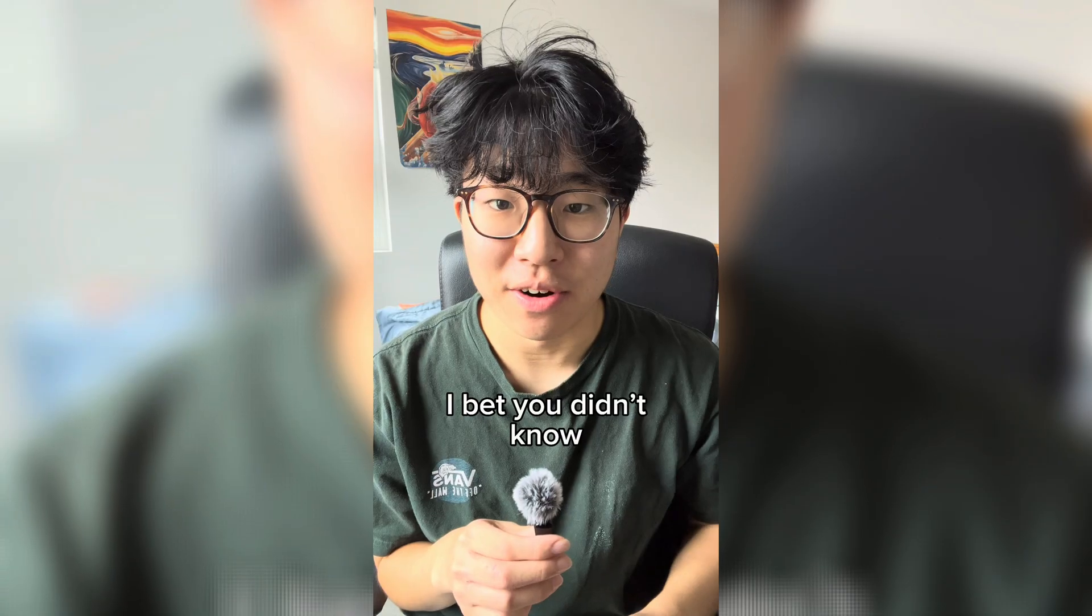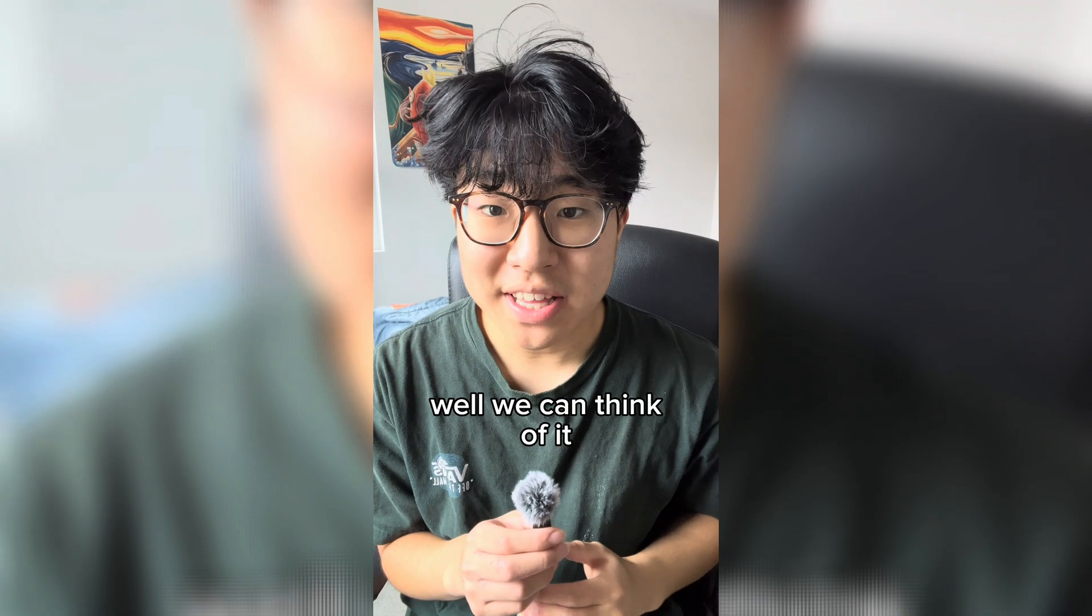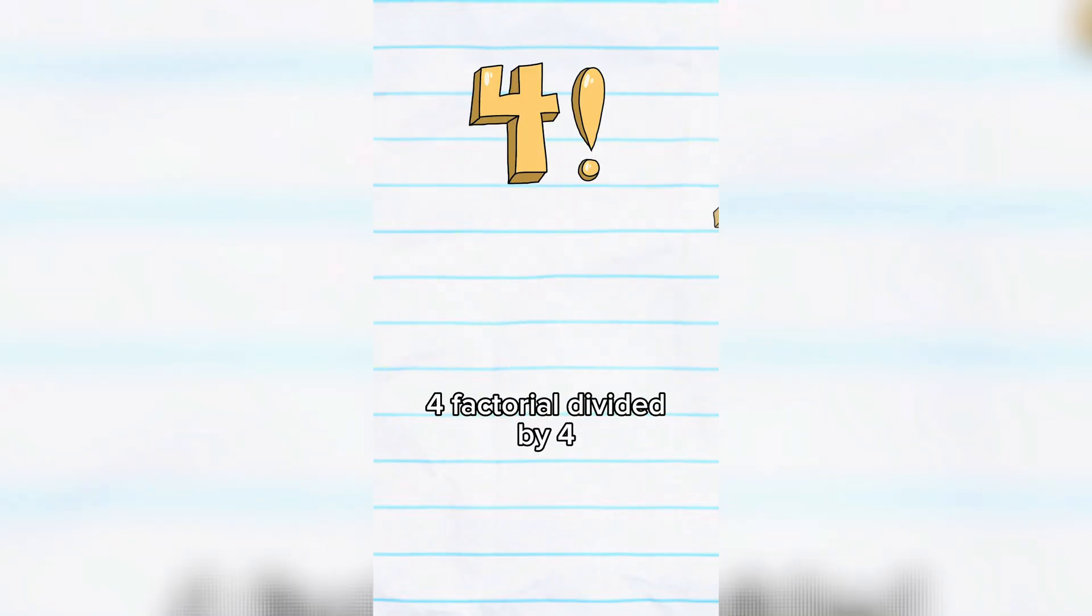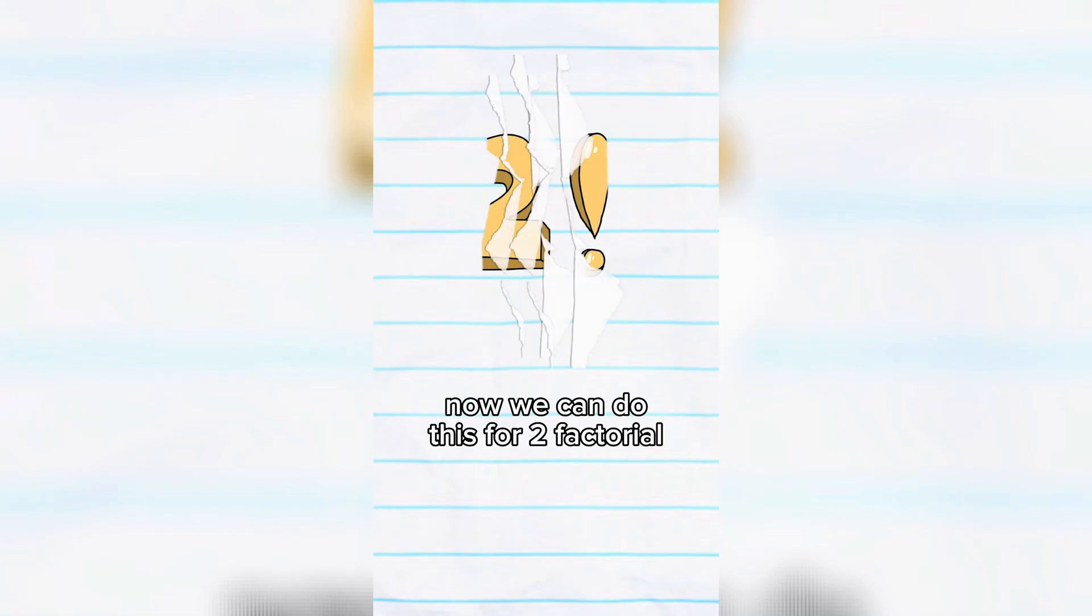Three math facts I bet you didn't know. What is 0 factorial? Well, we can think of it like this. 4 factorial is 4 times 3 times 2 times 1, so 3 factorial is basically 4 factorial divided by 4. Now, we can do this for 2 factorial,